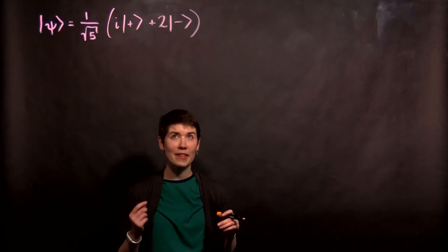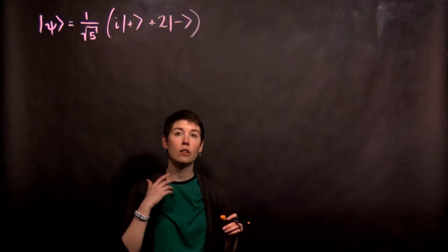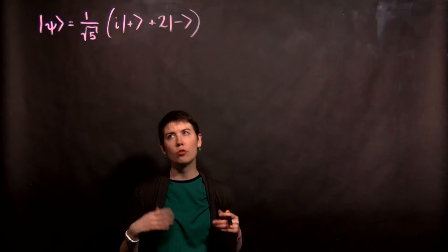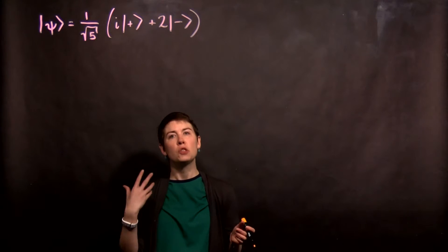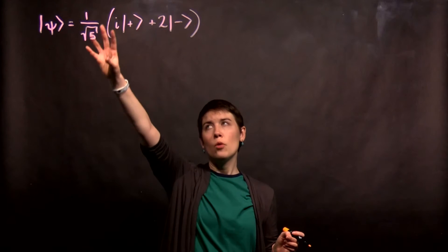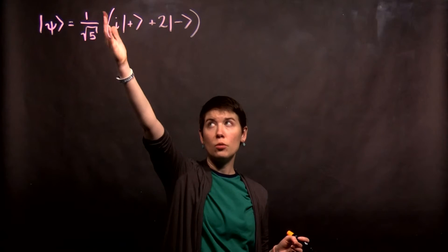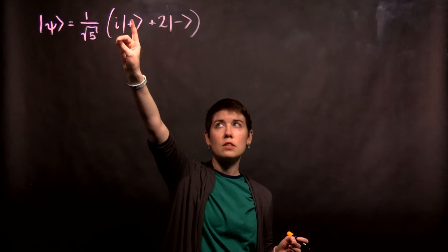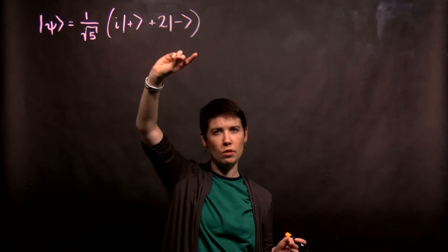In this video I'm going to go through an example calculation of calculating an orthogonal vector or an orthogonal state to a given state. So in this case we have state psi, we have our normalization coefficient 1 over square root of 5, and then it's i spin up plus 2 spin down.